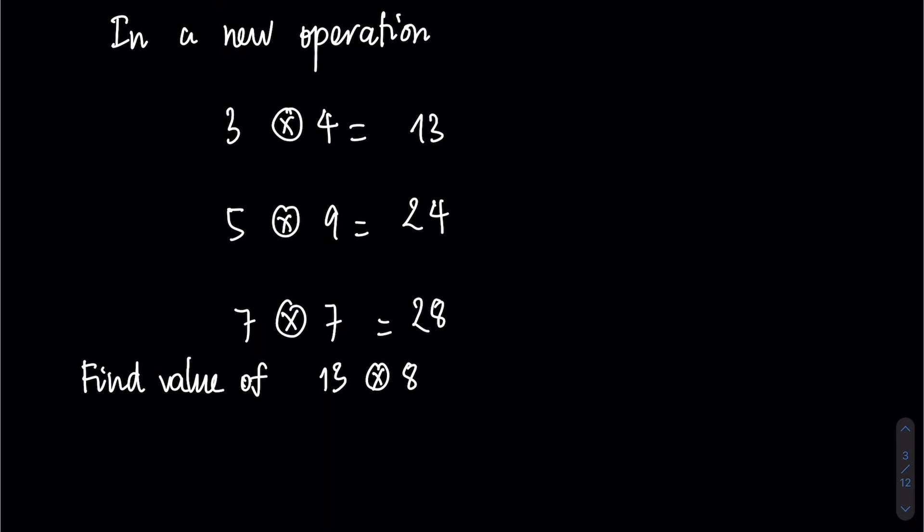Right now we are going to solve this question together. In a new operation, 3 times circle 4 equals 13, 5 times circle 9 equals 24, 7 times circle 7 is 28. Find the value of 13 times circle 8.